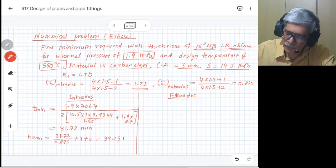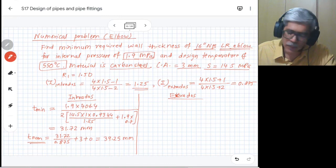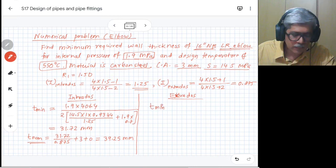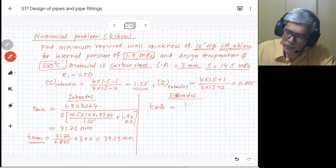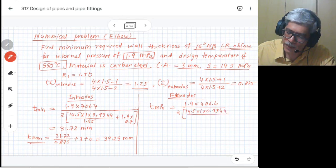If you do the calculations for the extrados, you will find it will be similar calculation. We have 1.9 into 406.4 divided by 2 times 14.5 into 1 into 0.9344, divided by I factor which will be different - so it is 0.875 - plus 1.9 into 0.7.